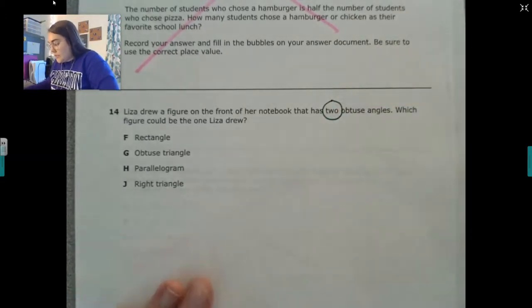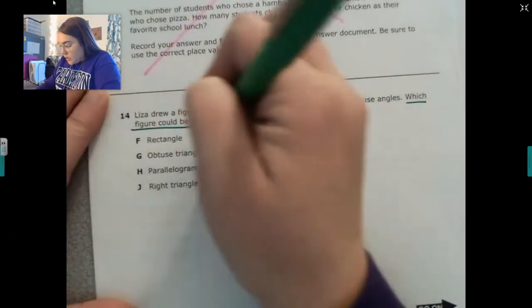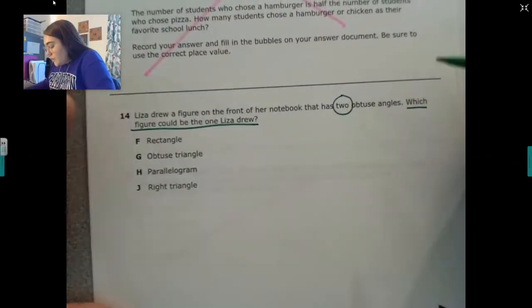Lisa drew a figure on the front of her notebook that has two obtuse angles. Which figure could be the one Lisa drew? So think about it.